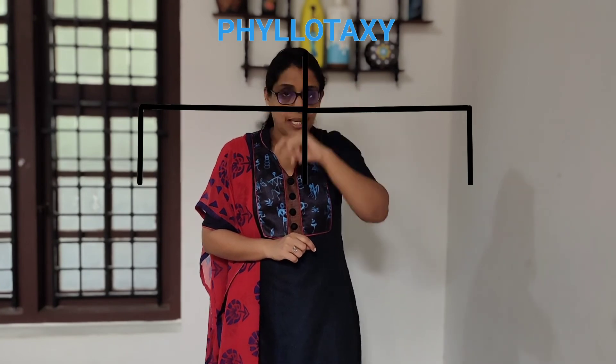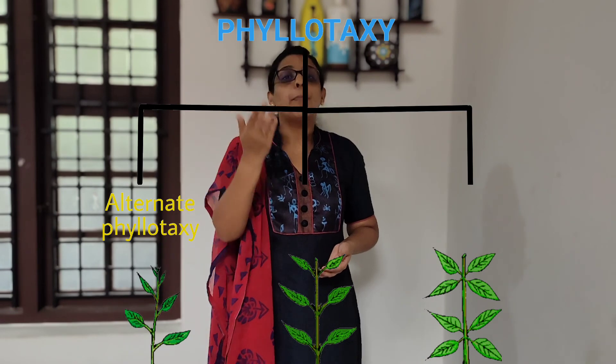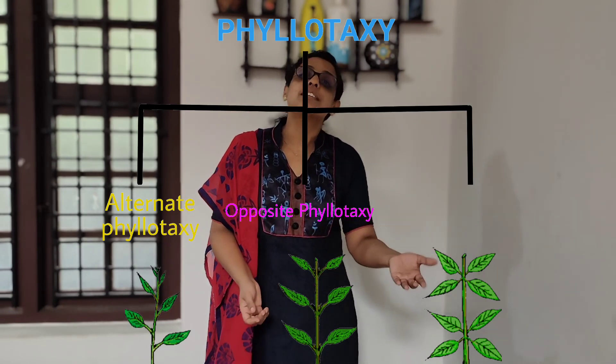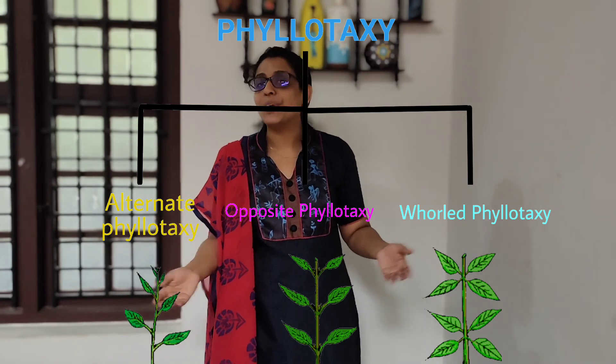Today we have studied about the arrangement of leaves in plants, and the term used to define it is phyllotaxy. We also tried to understand three different types of phyllotaxy: alternate phyllotaxy, opposite phyllotaxy, and whorled phyllotaxy. I hope it is clear to you. Thank you.